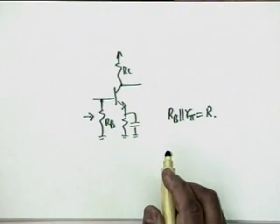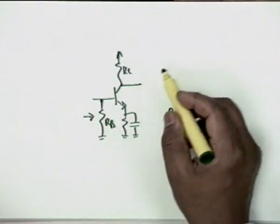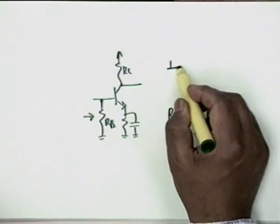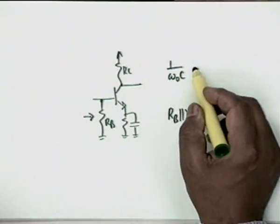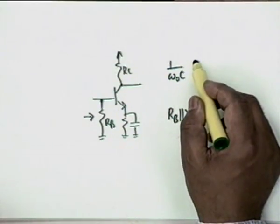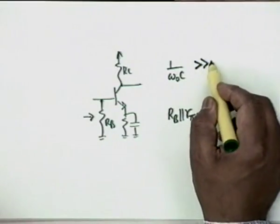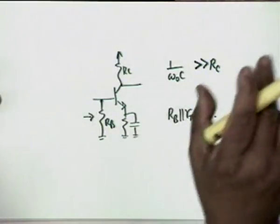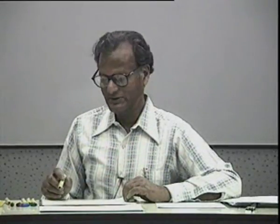If R_B ‖ R_π = R is achieved, the frequency of oscillation is still given by 1/(√6 CR), provided 1/(ω₀C) is much greater than R_C. Otherwise R_C will appear in the formula. It would be instructive to not make these adjustments and derive how the frequency of oscillation and the gain requirement change.